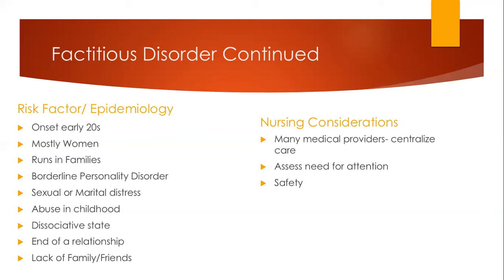As far as treatment goes, we want to do really intense collaboration between medical, psychiatric inpatient, and psychiatric outpatient teams with frequent communication. As far as nursing considerations go, we want to monitor for multiple healthcare providers, assess their need for attention and treat it in any way we can, and attend to any safety issues. They're at high risk for severe illnesses, accidental suicide, as well as inducing illnesses upon others.